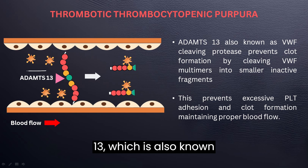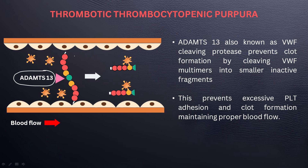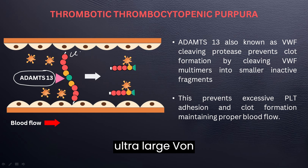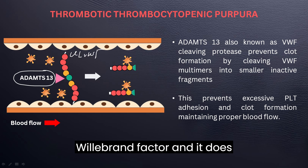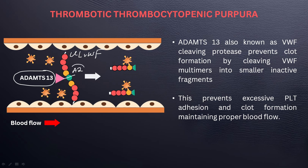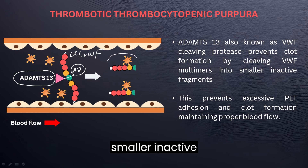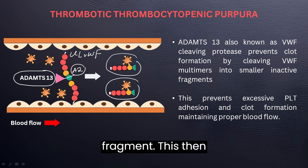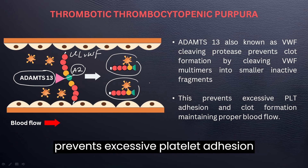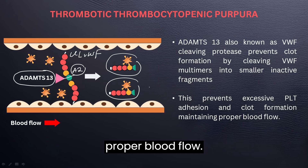Here we have ADAMTS13, also known as von Willebrand factor cleaving protease. What it does is cleave the ultra-large von Willebrand factor at the A2 domain, cutting it into smaller inactive fragments. This prevents excessive platelet adhesion and clot formation while maintaining proper blood flow.